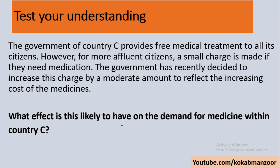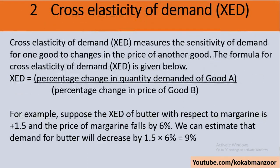The second concept is cross elasticity of demand. Cross elasticity simply means when there is a change in the price of one product and it affects the demand of another product. The formula involves the percentage change in the quantity of good A caused by the percentage change in the price of good B — there are two goods involved.